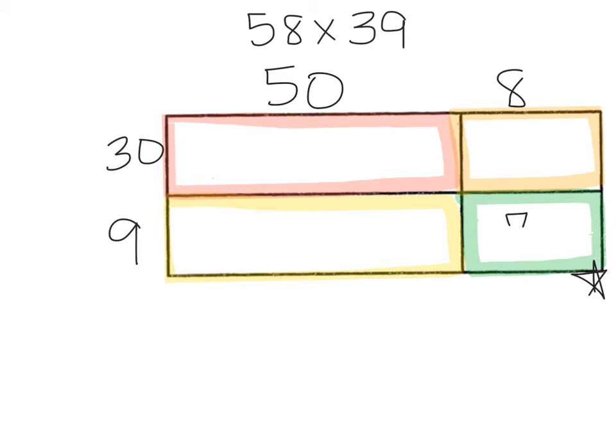So 8 times 9 is 72. Sliding over to yellow, that's next: 50 times 9. Shortcut that. 9 times 5 is going to give you 45, and then you've got the zero from the 50. So 450 in the yellow, and we are now done with the 9 and we're sliding up to now multiply by 30.